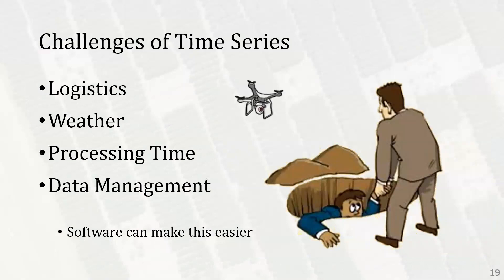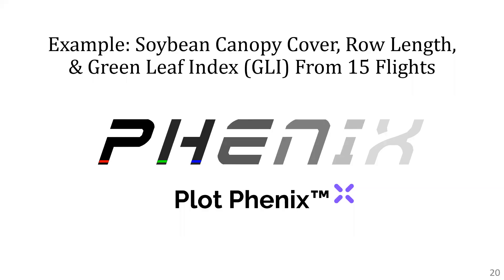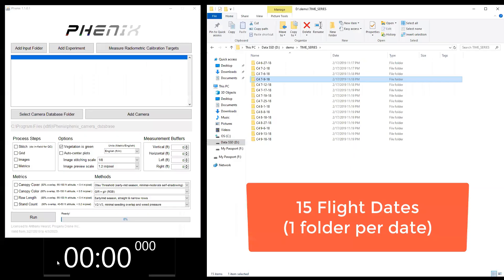I want to acknowledge that yes, it is challenging to do this type of work. Logistics can be a problem getting all these flights done and sometimes the weather won't cooperate. Processing time for all this data has been a barrier for a lot of people, and data management can also be tricky — our upcoming webinar will be focused on data management. But software can make this a lot easier. We'll show you getting soybean canopy cover, row length, and green leaf index from 15 flights over a soybean trial using software we developed called Plot Phoenix.